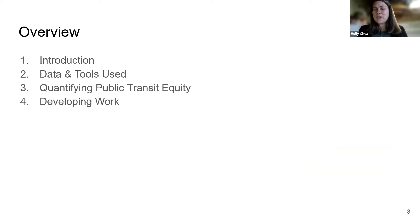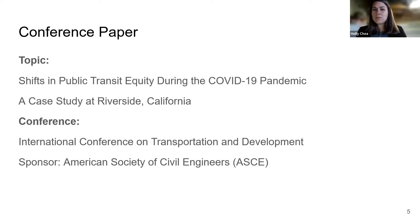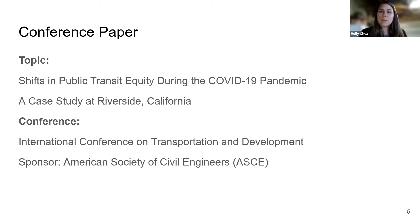Thank you, Shang. I'm going to give an overview of what we'll be talking about today. I'll start with an introduction of what we studied and why, then Preston will go over the data and tools we used, followed by how we quantified public transit equity and our results. Then Shang will look at what we're currently studying. So to start, we're covering the conference paper we've done. The topic was shifts in public transit equity during the COVID-19 pandemic — a case study at Riverside, California — accepted for the International Conference on Transportation and Development held by the American Society of Civil Engineers.